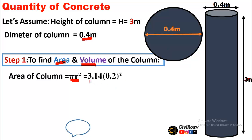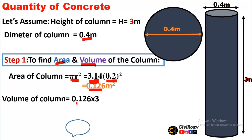The area will be equal to 3.14 — the value of pi — multiplied by the radius squared. The radius is half of the diameter, which is 0.2 meters. So the area comes out to be 0.126 square meters. The volume will be equal to area multiplied by height. As the area is 0.126 and the height is 3 meters, multiplying them gives a volume of 0.378 cubic meters.